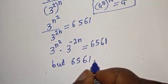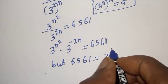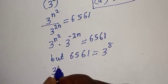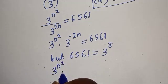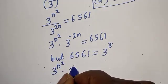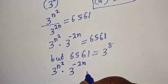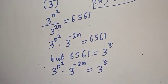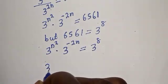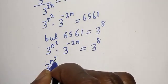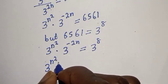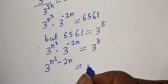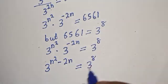Now, 6561 is equal to 3 raised to power 8. So we have 3 raised to power n squared multiplied by 3 raised to power minus 2n, equal to 3 raised to power 8. This gives us 3 raised to power n squared minus 2n, equal to 3 raised to power 8.